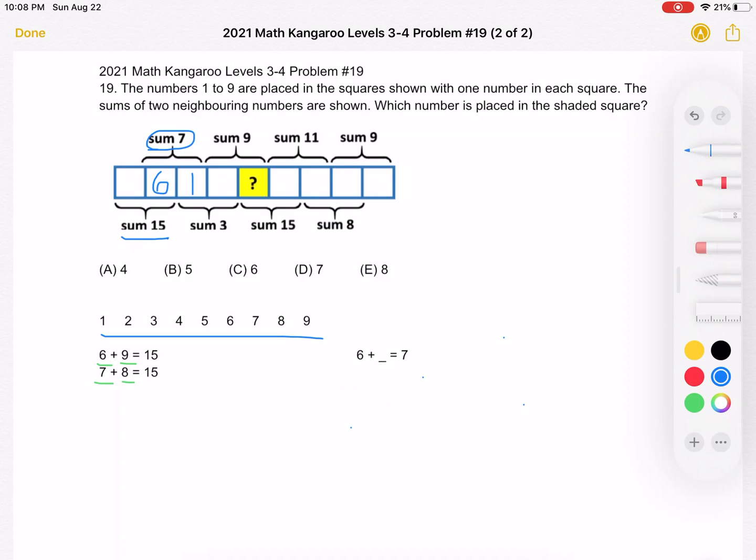So there must be a 1 there. Now we have 1 plus what number equals 3? We have a sum of 3. So that number we know is 2.